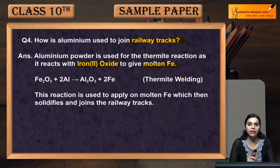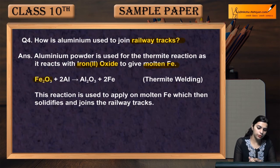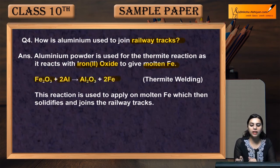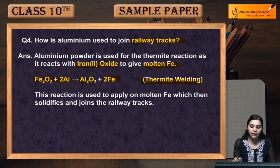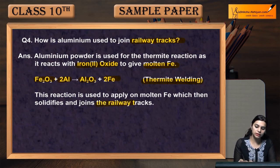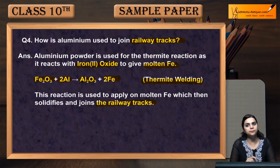This process is called thermite welding. The thermite reaction is: Fe2O3 + 2Al → Al2O3 + 2Fe. This reaction is used to apply molten iron which then solidifies and joins the heavy railway tracks.